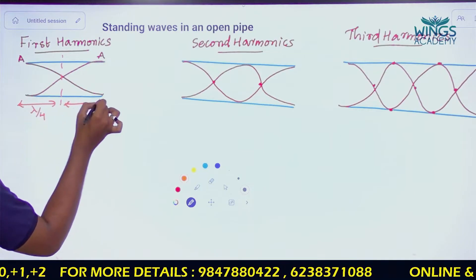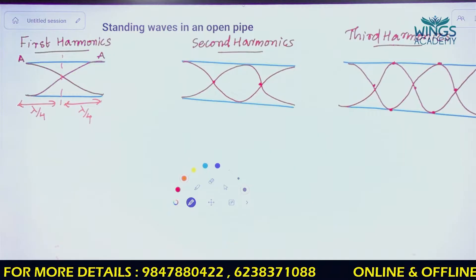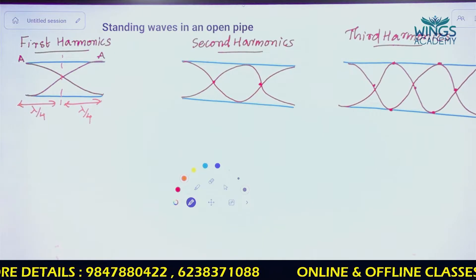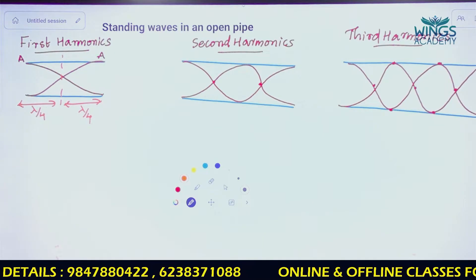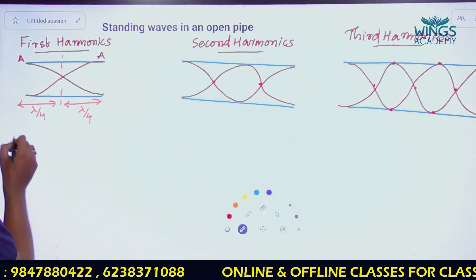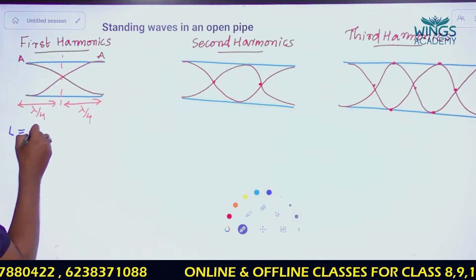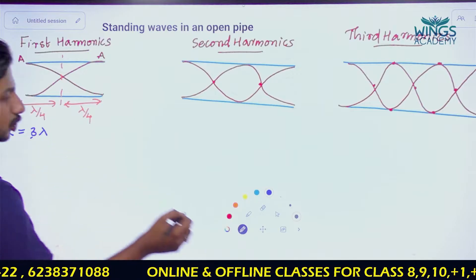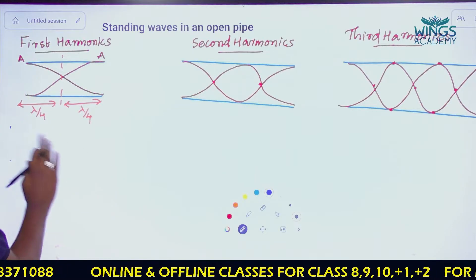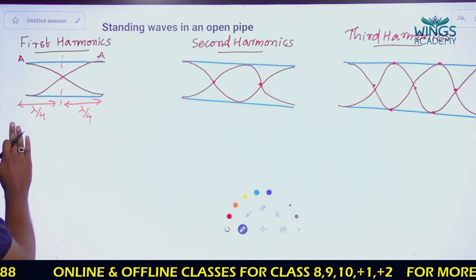In the closed pipe video, we asked how many lambda by 4 segments fit. There are 2 lambda by 4. Then the length is equal to 2 lambda by 4, so l = 2λ/4.